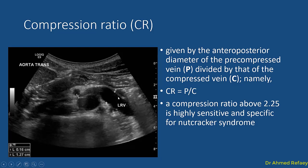The compression ratio is given by the anterior-posterior diameter of the pre-compressed vein divided by that of the compressed vein at the region of the superior mesenteric artery and the aorta. The normal compression ratio is less than 2.25. A compression ratio greater than 2.25 is highly sensitive and specific for Nutcracker Syndrome.